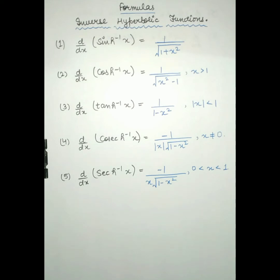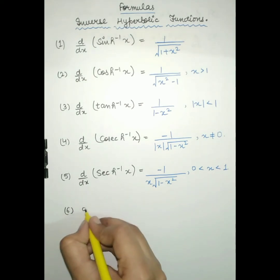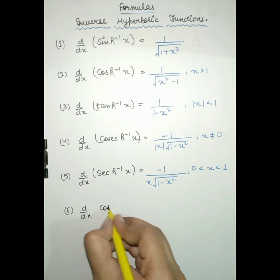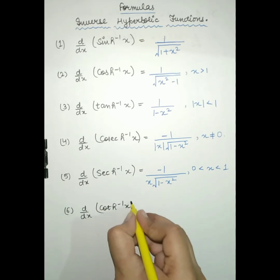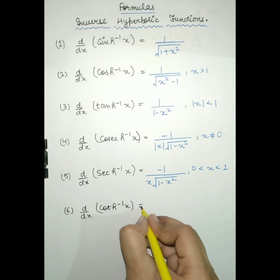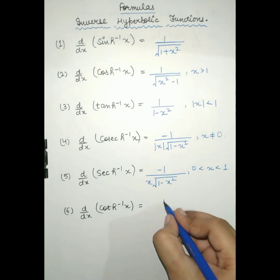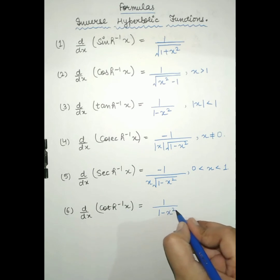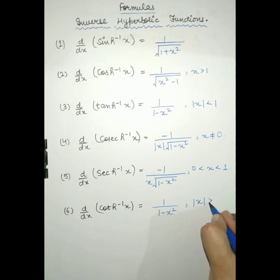Sixth is the derivative of cot hyperbolic inverse x, which will be equal to 1 upon 1 minus x square, where mod of x is greater than 1.